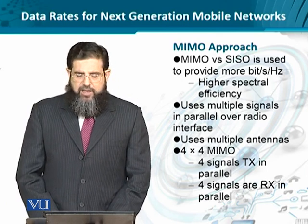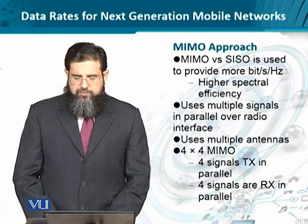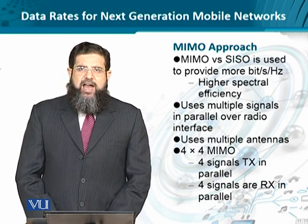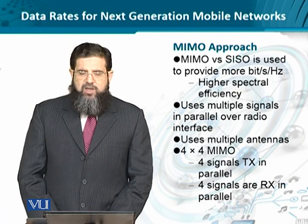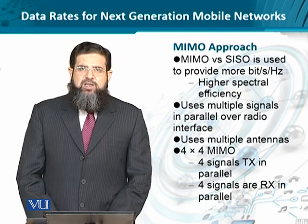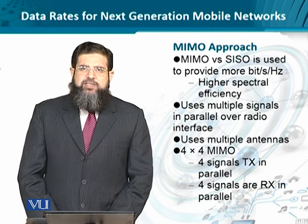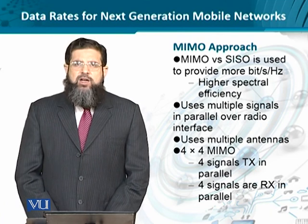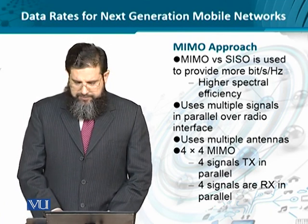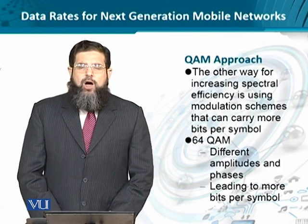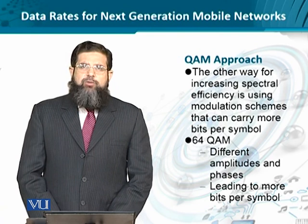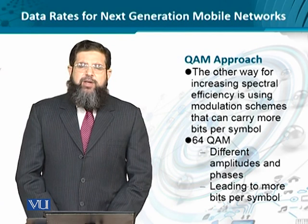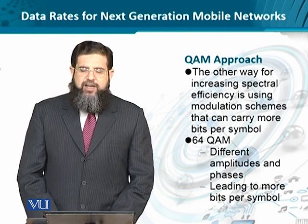Consider an example of 4x4 MIMO: four signals are transmitted in parallel as input to the system, and four signals can be received as output from the system simultaneously, meaning four duplex connections are established at the same time. With MIMO over SISO, we would see four orders of improvement straight away in the spectral efficiency.